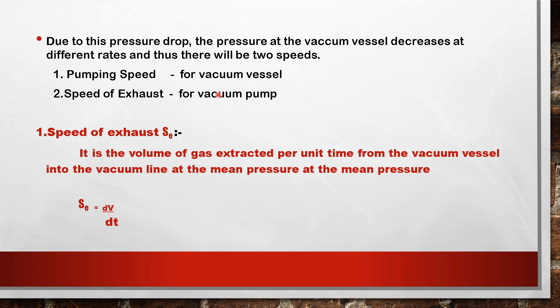The speed of exhaust, S_e, is the volume of gas extracted per unit time from the vacuum vessel into the vacuum line at mean pressure. It is expressed as dV/dt — the volume of gas extracted per unit time from the vacuum vessel into the vacuum line at mean pressure.